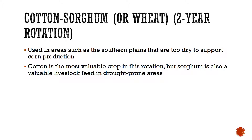Next is cotton-sorghum, or you could do cotton-wheat. This is actually done in the southern plains and a lot in southern Oklahoma. Because cotton is the cash crop, we would put sorghum or wheat in there to kind of offset some feed costs if you were a livestock feeder, or to address any nutrient deficiencies. Pretty common in the southern part of Oklahoma and most of Texas and the southern plains.